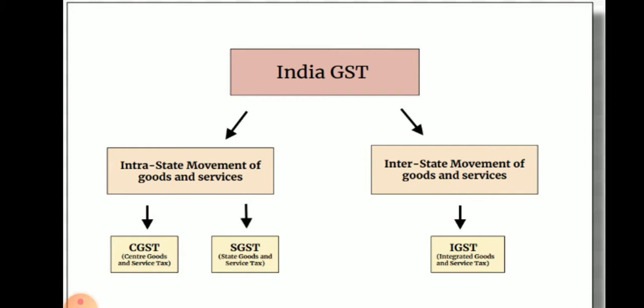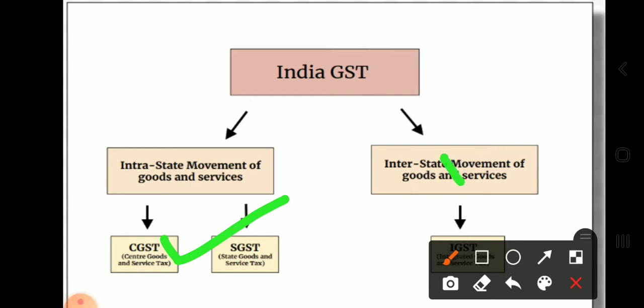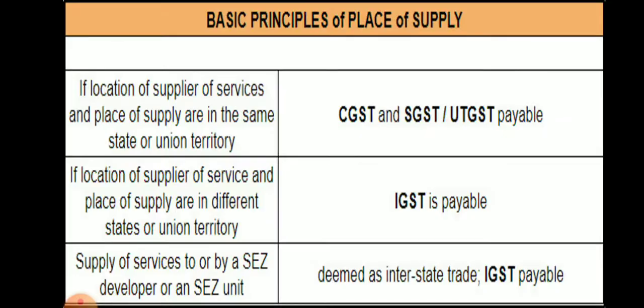We have already discussed the India GST framework, जिसमें हमने देखा यदि intrastate movement of goods and services है तो उस पे CGST और SGST applicable होता है, जबकि interstate movement of goods and services के case में IGST applicable होता है.